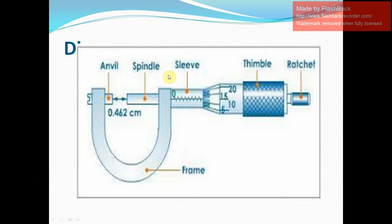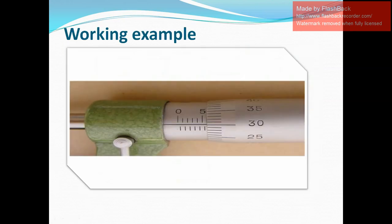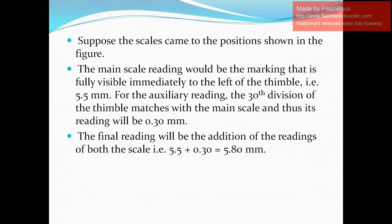The frame is the heavier part of the screw gauge. The main scale and circular scale are used to take readings. Now we will discuss a working example. Suppose you have fixed the spindle and anvil, tightened the screw gauge, and placed an object in its frame between the anvil and spindle.